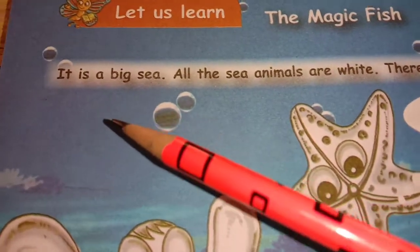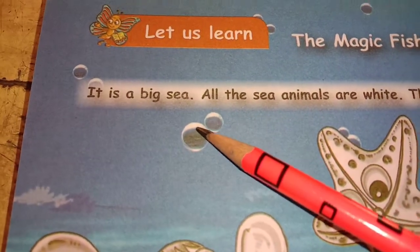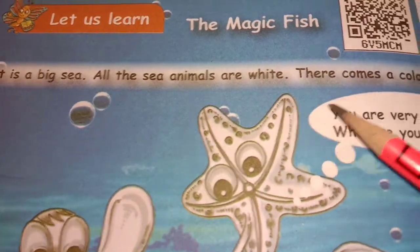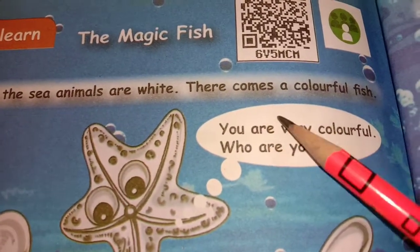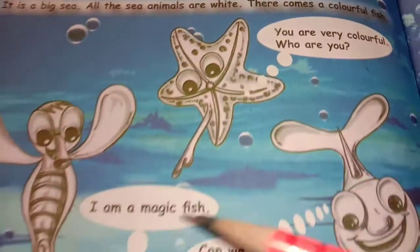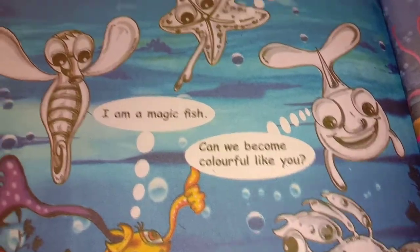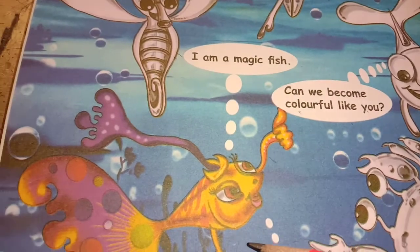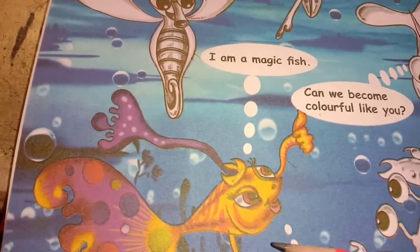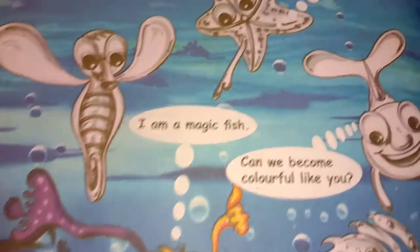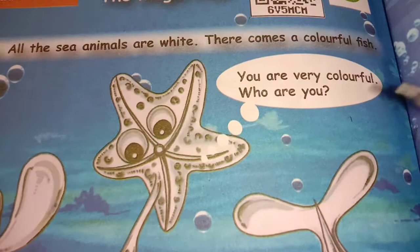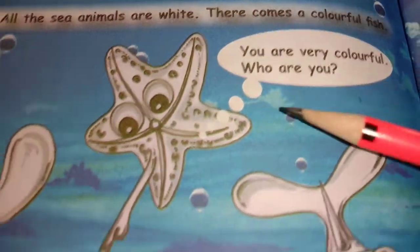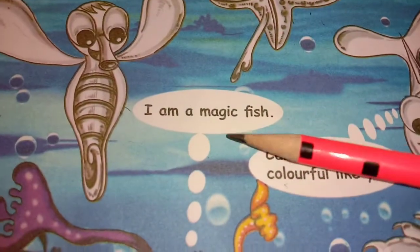See here, it is a big fish. All the sea animals are white. There comes a colourful fish. So all the animals look very white. There comes a magic fish — it's a colourful fish. The other animals say: you are very colourful!